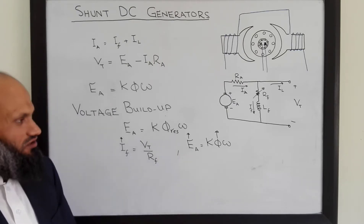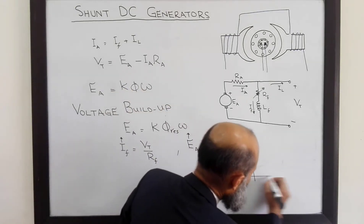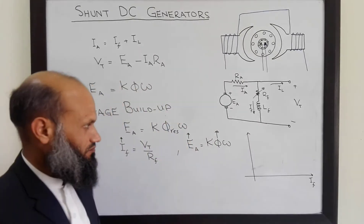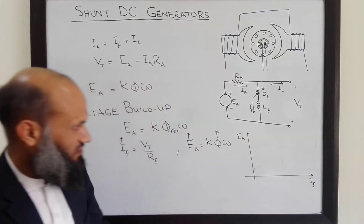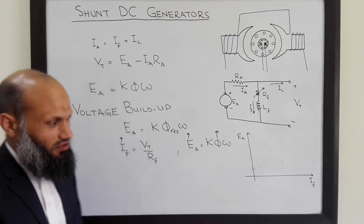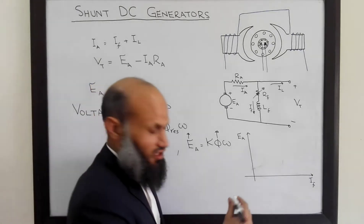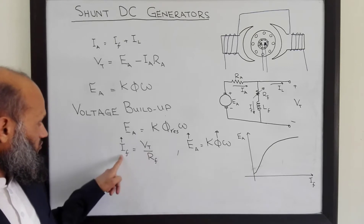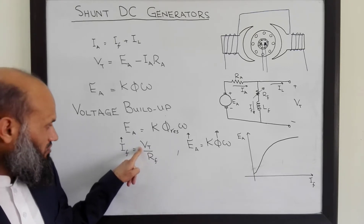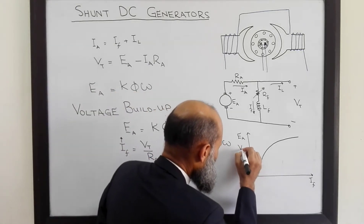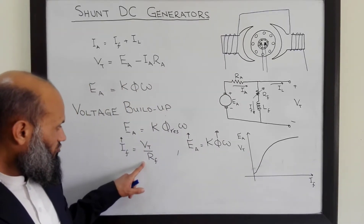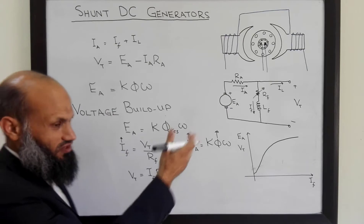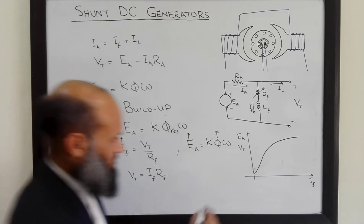How much will the generated voltage increase? Would it keep increasing forever? The increase in generated voltage is limited by saturation in the magnetization curve. The magnetization curve relates field current I_F and generated voltage E_A. If we also sketch the terminal voltage V_T on the same graph, V_T equals I_F multiplied by R_F, which is the equation of a straight line with slope given by R_F.